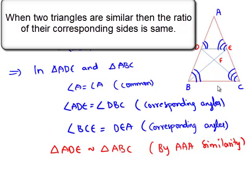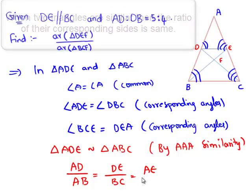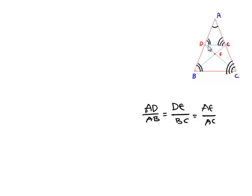We know that when two triangles are similar, the ratio of their corresponding sides must be equal. So we consider the ratio: AD is to AB, which equals DE is to BC, which equals AE is to AC. Since the ratio of corresponding parts of similar triangles must be equal, and we are given that AD to DB equals 5 to 4, we now work with AD to AB.